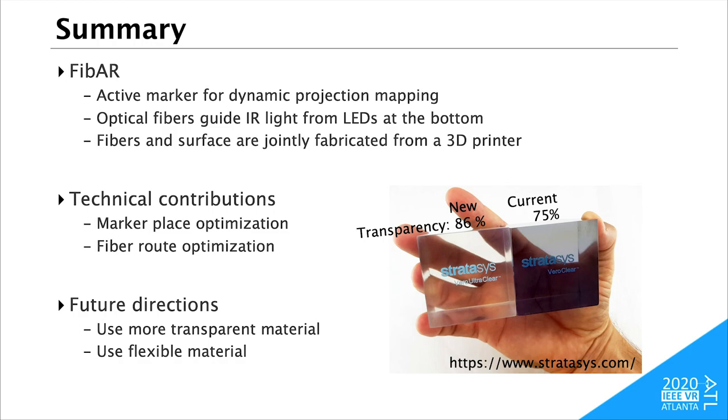This is the summary of my presentation. We proposed an active marker technology for dynamic projection mapping. There are two technical contributions: one is marker placement optimization and the second is fiber route optimization. Interesting future directions are to use more transparent material, which is recently available, and to apply this technology to a flexible object such as a soft robot. I hope our framework will be applied in many fields in near future. Thank you.